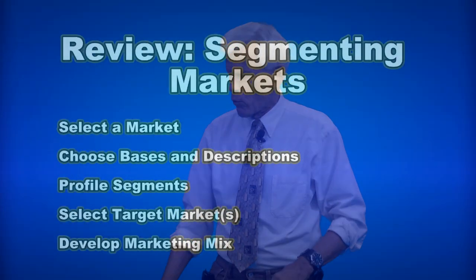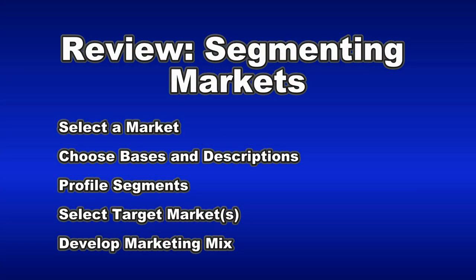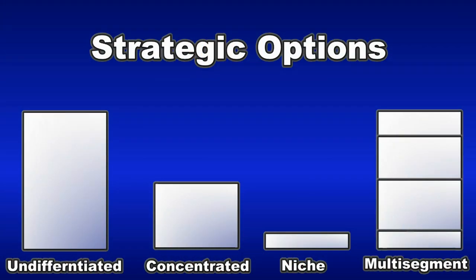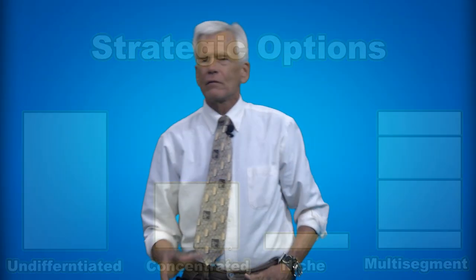Let's review what we've done to this point. Basically, we select a market, choose the bases and descriptions for segmentation, profile them, then choose which markets we're going to go after, and develop a marketing mix. When we do that, we've got four different strategic options: undifferentiated — one product for one market for everybody; concentrated — only one market segment; niche — one market and fairly small; and multi-segment marketing — different marketing mixes to different segments.